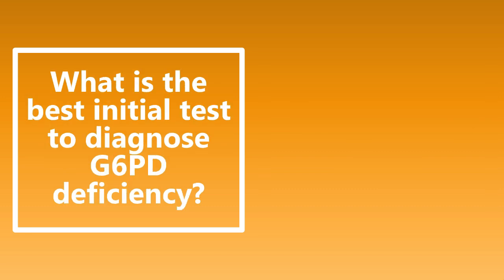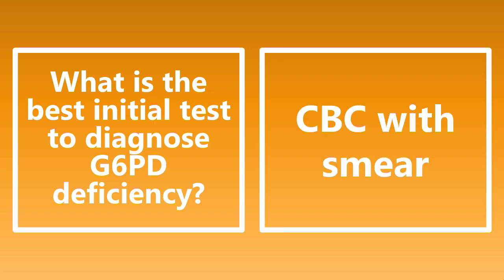What is the best initial test to diagnose a G6PD deficiency? This is going to be a CBC with a smear. Patients with G6PD deficiency can show features of hemolysis like bite cells and Heinz bodies. Heinz bodies are inclusions of damaged hemoglobin within red blood cells. If you do the smear and you're able to see those cells, that is the best initial test for diagnosing a G6PD deficiency.